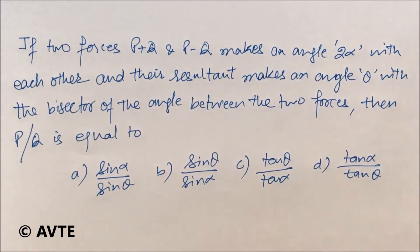Because 2α is the angle between the two forces and θ is what the resultant makes with the bisector, the angle with the greater force will be α-θ.